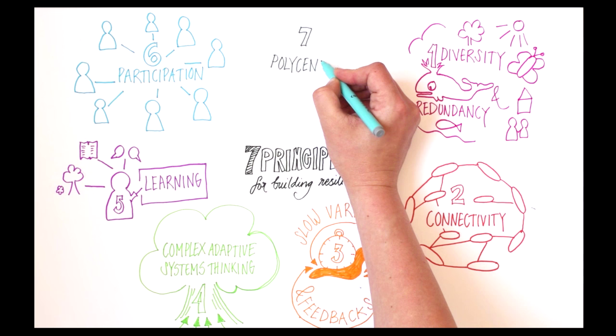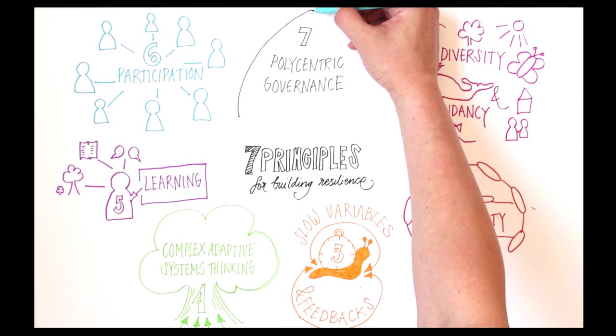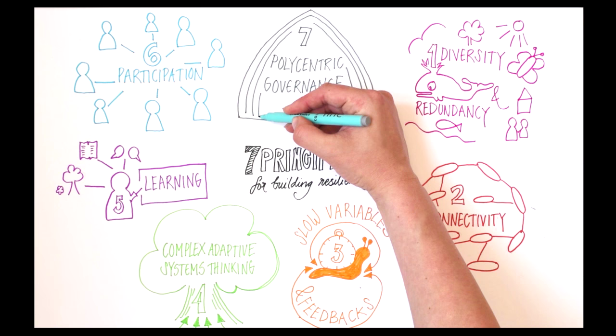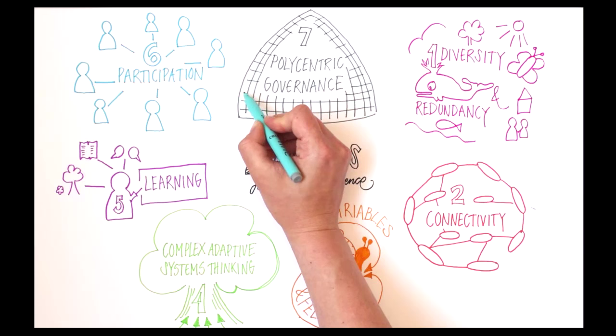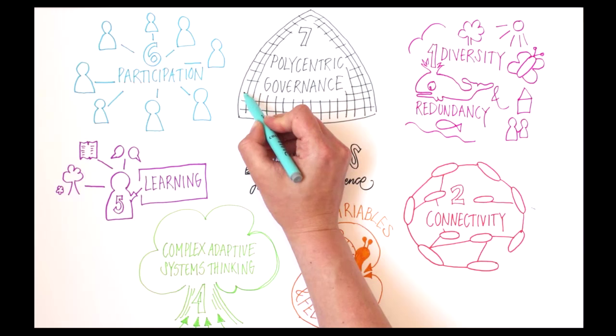Principle 7: Promote polycentric governance. Polycentricity, a governance system in which multiple governing bodies interact, can help support collective action in times of change. But it is also vulnerable to tensions between actors and institutions. Involving a wide range of stakeholders means striking a balance between openness and mandates for decision-making.